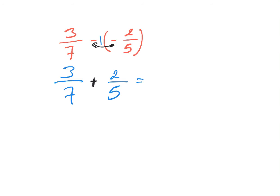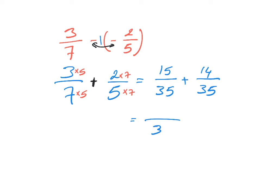Now we need to find a common denominator between seven and five. It's going to be 35, because seven times five is 35 — there's nothing common between them. We multiply by five in both the denominator and numerator for the first fraction, and by seven for the second. So we get 15 over 35 plus 14 over 35. We keep the denominator and add the numerators: 15 plus 14 equals 29 over 35.